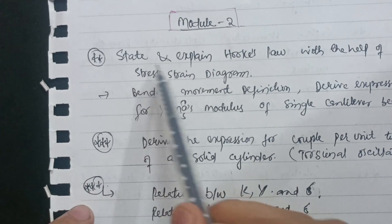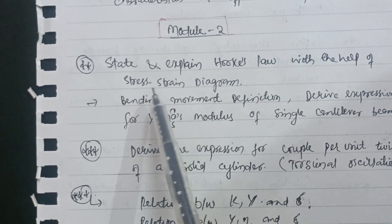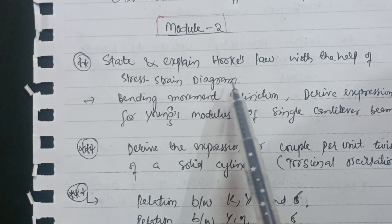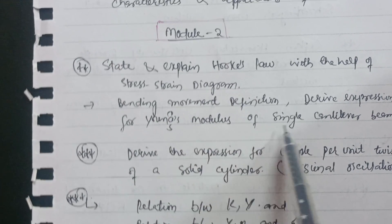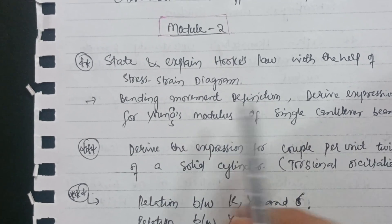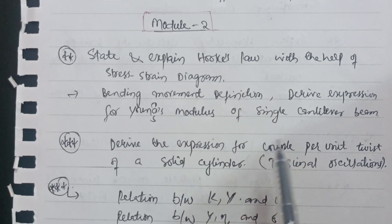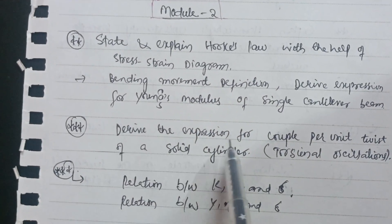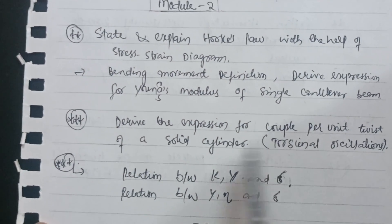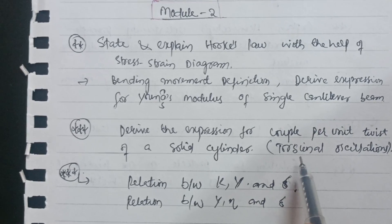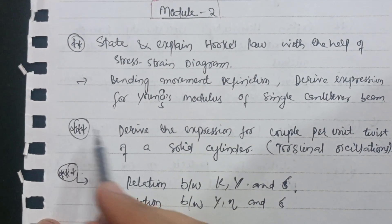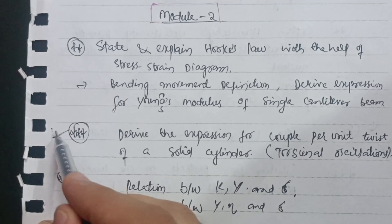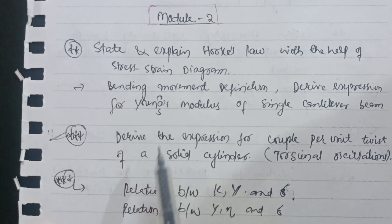In Module 2, the important questions are: state and explain Hooke's Law with the help of a stress-strain diagram, including the bending moment definition, and derive the expression for Young's modulus of a single cantilever beam. Also, derive the expression for couple per unit twist of a solid cylinder — that is, torsional oscillations. This is a super important question in Module 2.